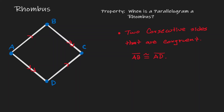If AB is congruent to AD, as shown here, and since this is a parallelogram, we know that opposite sides are congruent. Therefore, the length of AD is the same as BC, and the length of AB is the same as DC. By doing so, we have shown that all the sides of this parallelogram are congruent. Therefore, this is a rhombus.